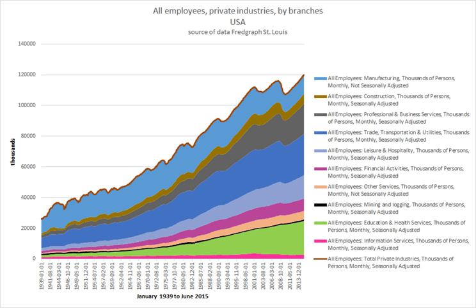A wage laborer is a person whose primary means of income is from the selling of his or her labor. In modern mixed economies such as that of the OECD countries, it is currently the dominant form of work arrangement. Although most work occurs following this structure, the wage work arrangements of CEOs, professional employees, and professional contract workers are sometimes conflated with class assignments, so that 'wage laborer' is considered to apply only to unskilled, semi-skilled or manual labor.